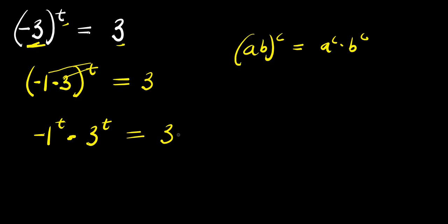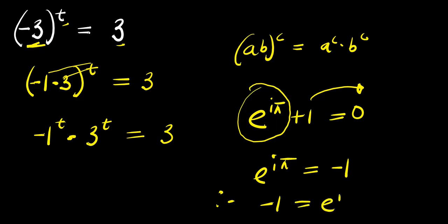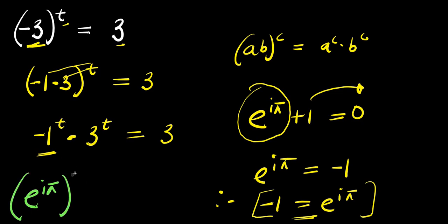Now the next thing will be for us to apply Euler's identity. If you have e^(i·π) + 1 = 0, you can isolate e^(i·π) by moving the positive 1 over, and it becomes negative 1. So e^(i·π) equals negative 1, which means negative 1 equals e^(i·π). So we are now going to replace this negative 1 with e^(i·π), giving us e^(i·π) raised to the power of t, times 3 raised to the power of t, equals 3.